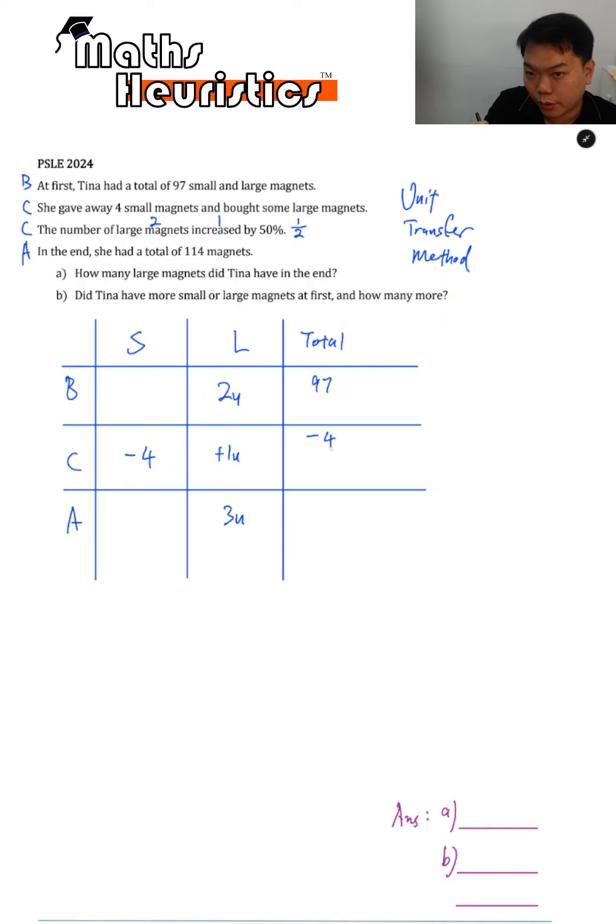Okay, so the total is going to experience that same change. Okay, once we have this, we can analyze the total here. You will see that one unit and 93 adds up to 114. So you can draw a mini model to guide you through on what you need to do to find the value of one unit.